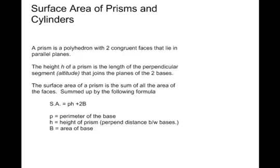The first being a prism. Recall that a prism is a polyhedron with two congruent faces that lie in parallel planes. The height of a prism is the length of the perpendicular segment, which we call the altitude, that joins the planes of the two bases.